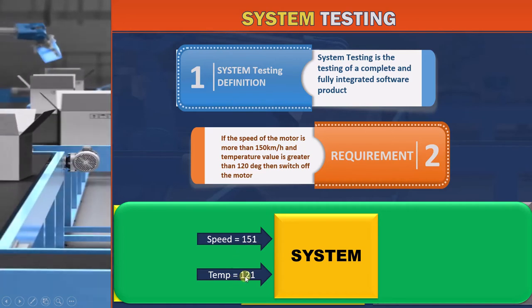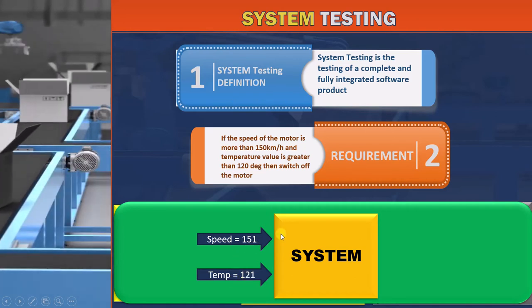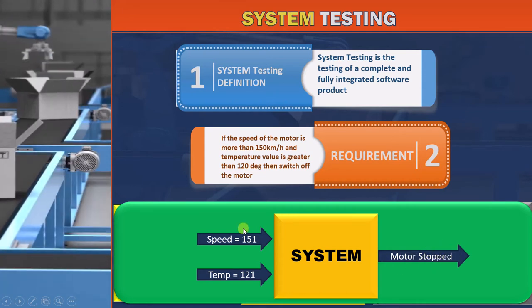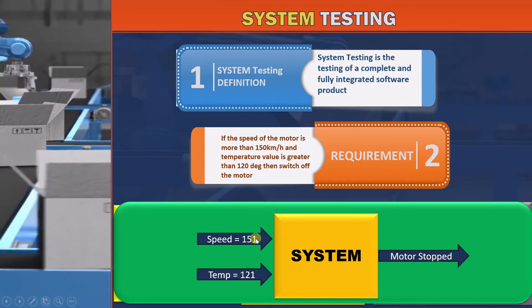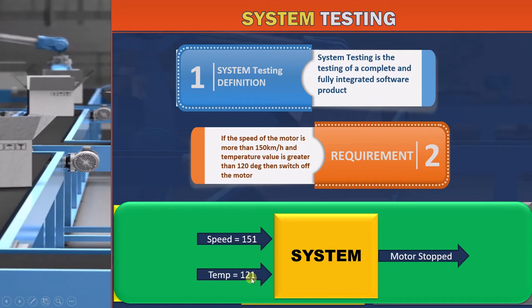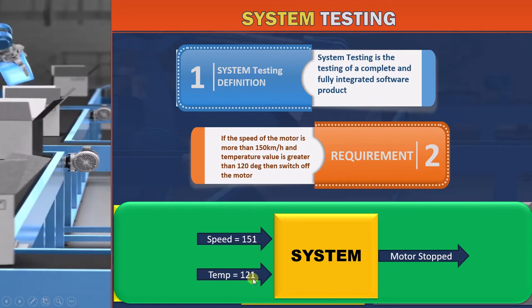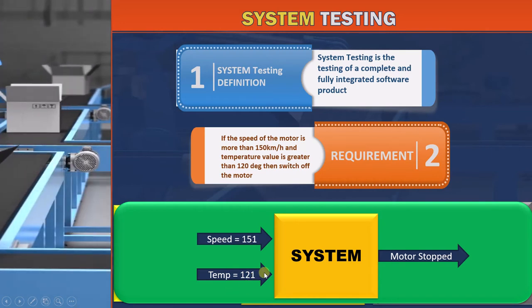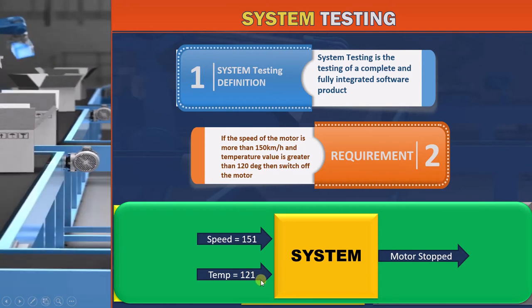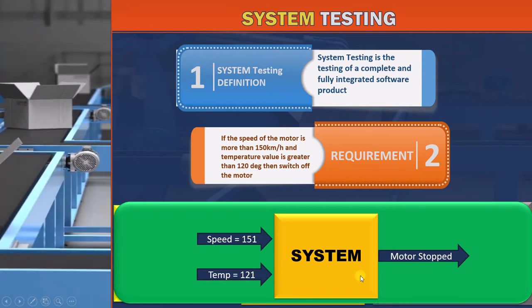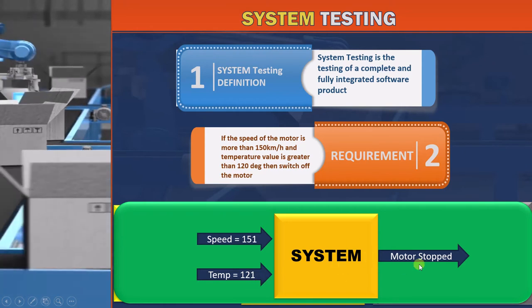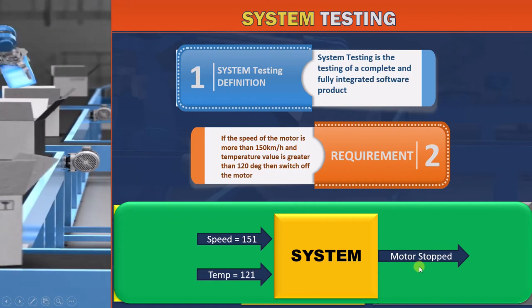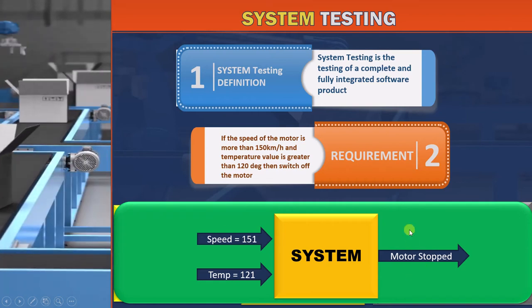If we raise both these values, then the motor should stop. So we give 2 values to the system: 151 speed, which is greater than 150 kmph, and 121 temperature, which is greater than 120 degrees. If the system is working, then as soon as the motor reaches these values, it should stop. So this is how system testing is carried out.